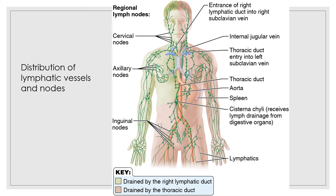Like the veins of the cardiovascular system, lymphatic vessels are thin-walled and the larger ones have valves to prevent backflow. It is a low-pressure, pumpless system, transported by the same mechanisms that aid return of venous blood — the milking action of skeletal muscles and pressure changes in the thorax during breathing, that is the musculatory and respiratory pumps. In addition, smooth muscle in the walls of larger lymphatics contracts rhythmically, helping to pump lymph along.